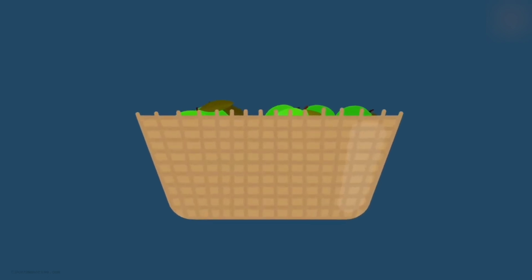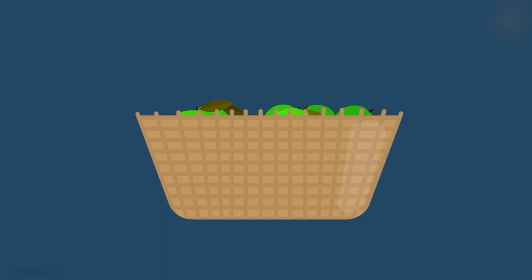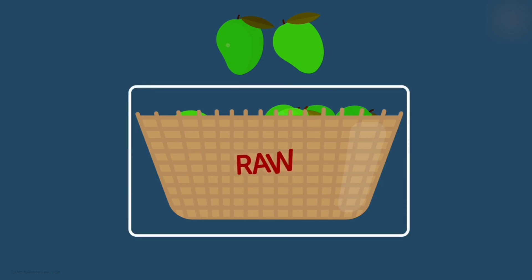Let's conduct an experiment. Consider a basket full of mangoes. You want to check whether they are raw or ripe. One can find out by observing the mangoes individually. So we start the process. We pick up a mango from the basket and observe it. We find the mango to be raw. Then we pick up another mango from the basket, observe it, and find that that's raw as well. Based on this, many of us would conclude that all the mangoes in the basket are raw.